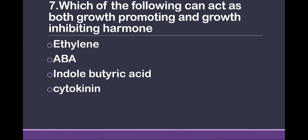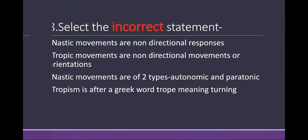The answer is formation of seedless fruits without fertilization. Question 7: Which of the following can act as both a growth-promoting and growth-inhibiting hormone — ethylene, abscisic acid (ABA), indole butyric acid, or cytokinin? The answer is ethylene. Ethylene is also known as both a growth-promoting and growth-inhibiting hormone.